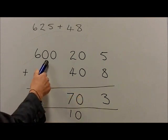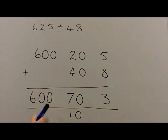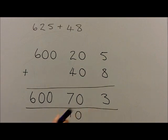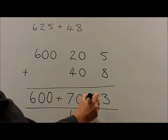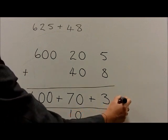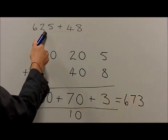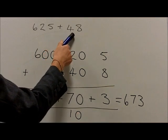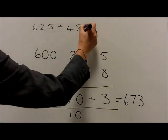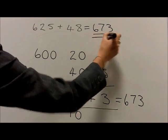The 100s is added — 600 — added to the 0, which gives us 600. And then the separate partitions, once again, added back together, so that 600 plus 70 is 670, plus 3, gives us 673. Therefore, 625 plus 48 is equal to 673, which is our final answer.